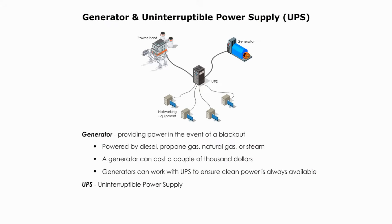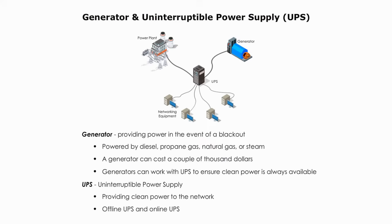UPS stands for Uninterruptible Power Supply. It is a battery-operated power source directly attached to devices and the main power supply. It can provide clean power to the network. There are two types of UPS: offline UPS and online UPS. I will demonstrate how they work in detail in the next few minutes.